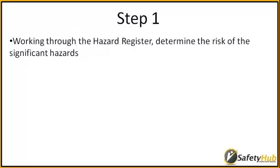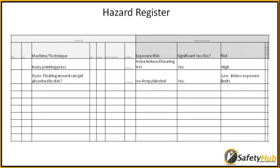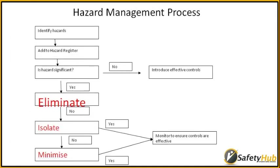So with those definitions behind you now, I want to go back to step one. Pull out your hazard register and assign a risk score to all the significant hazards. Remember, what we're trying to do here is work out what priority we should be working through them. Working through our printing press example, we've come up with a high and a low risk. So now we need to control the hazards starting with the noise hazard, using the eliminate, isolate, or minimise control method.